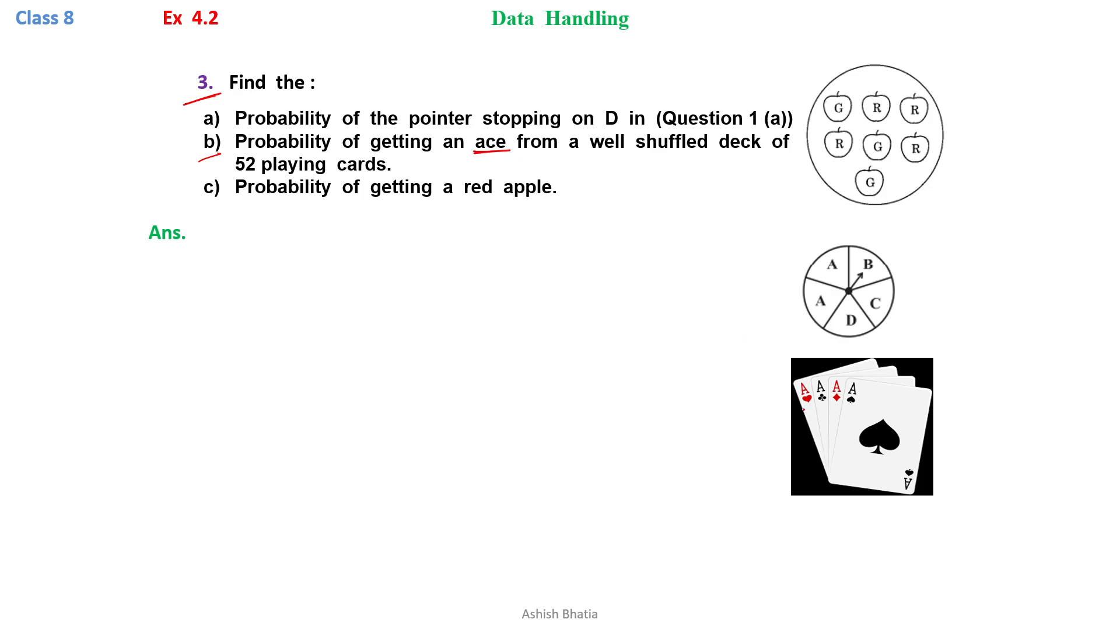An ace is the card marked A, and there are four types: hearts, clubs, diamond (or brick), and spade. So there are four types of ace cards in total.